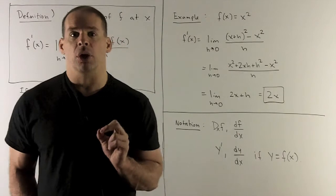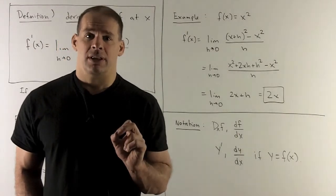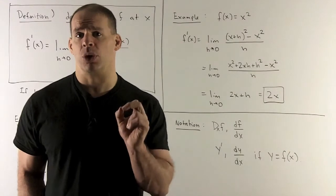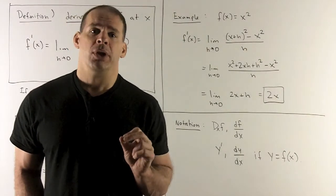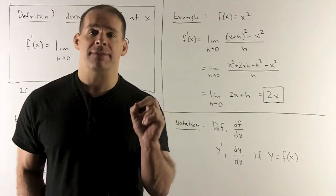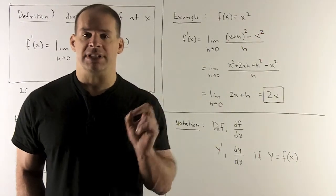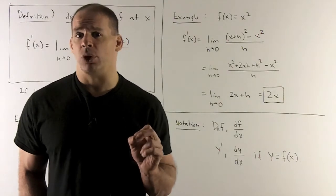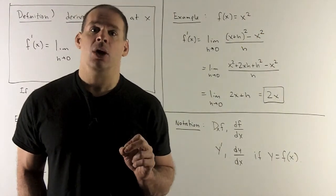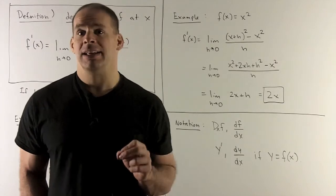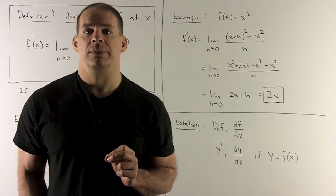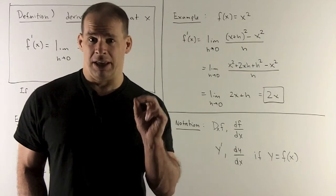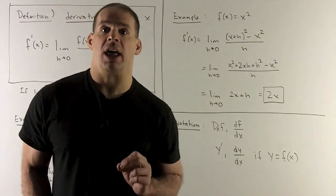One thing to note: the notation for the derivative is going to vary a lot depending on context and source. You'll see things like capital D-sub-x of f, or df/dx, which is what we call the Leibniz notation. And if you also have y = f(x) floating around, you'll see y-prime and dy/dx. Just remember, these are all giving us the same thing: the slope of the tangent line.